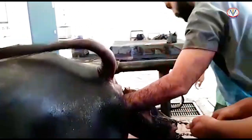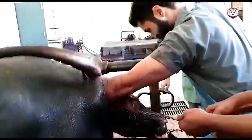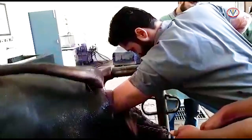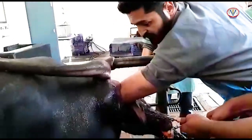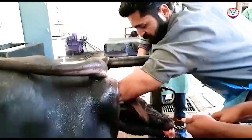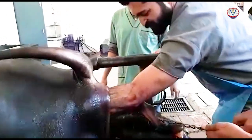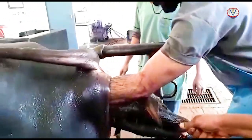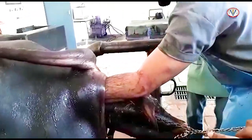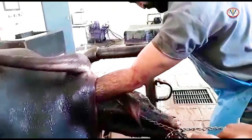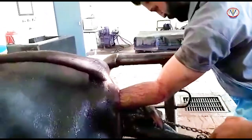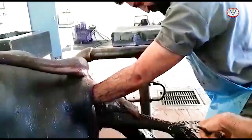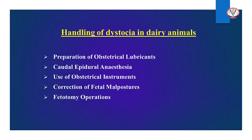Dystocia is one of the most common obstetrical conditions in dairy animals. If it is not managed timely, it becomes life-threatening to the dam as well as the fetus, causing huge economic losses to farmers.